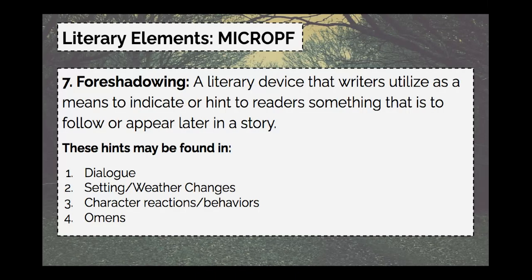So we have seven elements of suspense: Mood, Imagery, Characterization, Repetition, Onomatopoeia, Pace, and Foreshadowing. As we continue throughout this unit, we're going to chunk them — as we read a story, we might only focus on two or three elements at a time. But it's important to know all seven from the get-go, so I wanted to introduce them all now. As we read our stories, we'll be focusing on individual elements at a time.